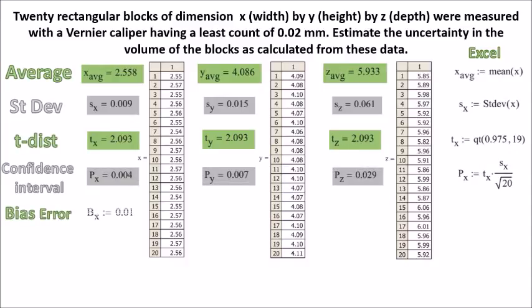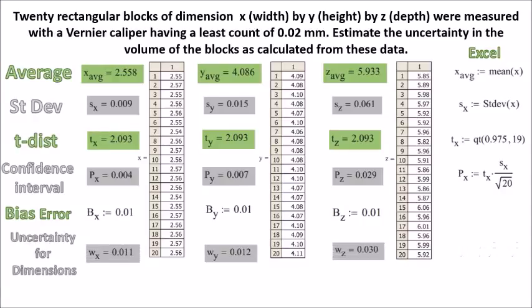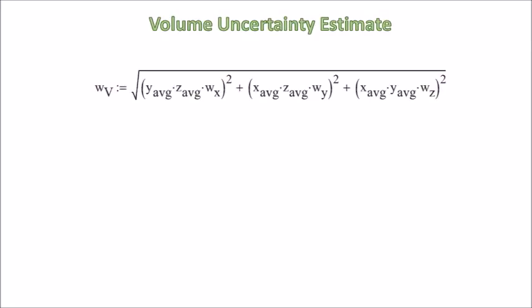Then the bias error. Then we take the uncertainties for dimensions. And finally, the volume uncertainty estimate given by this formula, and plugging in all the values that we got from the previous operations, we get the final result.